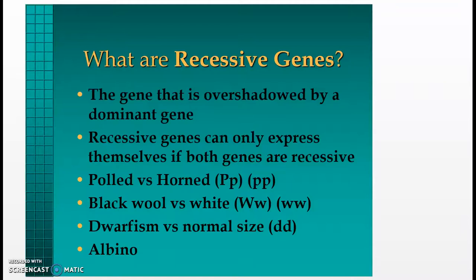What are recessive genes? A recessive gene is the gene that is overshadowed by a dominant gene. Recessive genes can only express themselves if both genes are recessive. For example, polled versus horned: an uppercase P represents a horned animal and a lowercase p represents a polled animal. So when the genetic makeup is uppercase P and lowercase p, that animal will be horned. Only when there are two recessive genes — two lowercase p's — will that animal actually be polled with no horns.